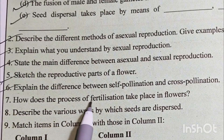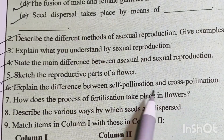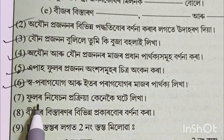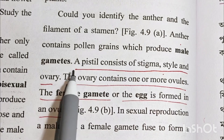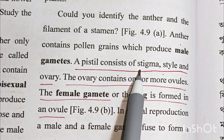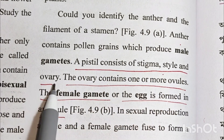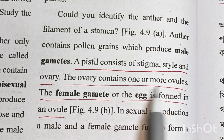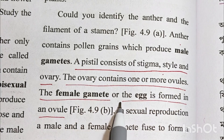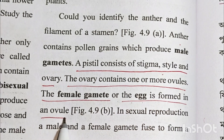Number 7: How does the process of fertilization take place in a flower? The pistil consists of stigma, style and ovary. The ovary contains one or more ovules. The female gamete or the egg is formed in the ovule.